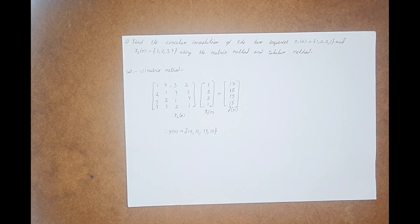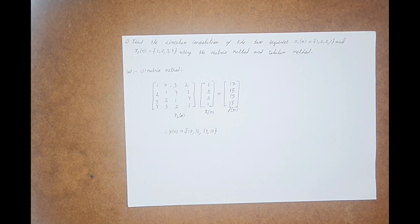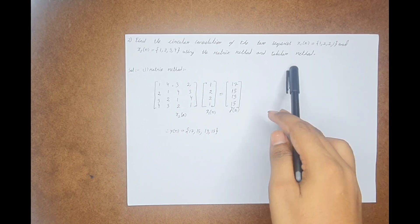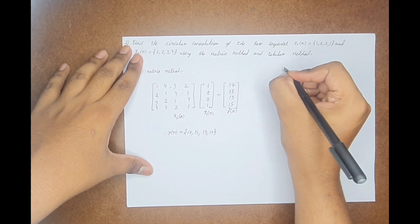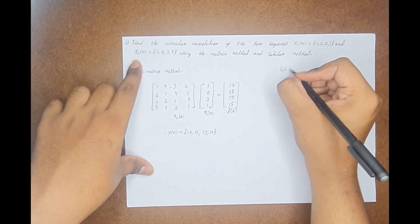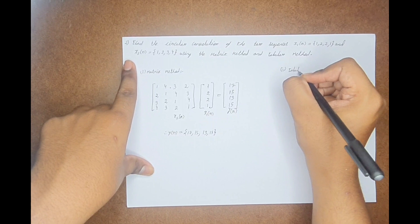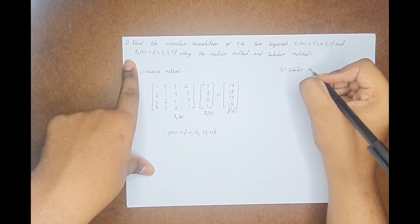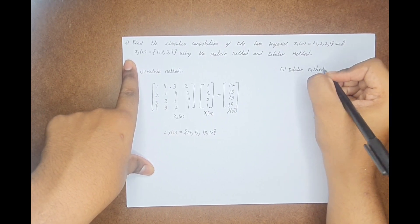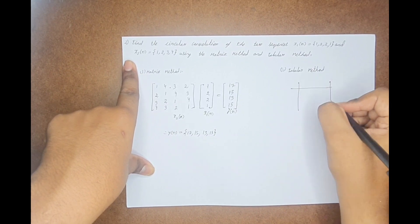But there is another method which is called the tabular method, which only very few people have an idea about. It is also a very easy method and we can find the answer very easily. So let us see the tabular method. For this method, just draw one line like this.